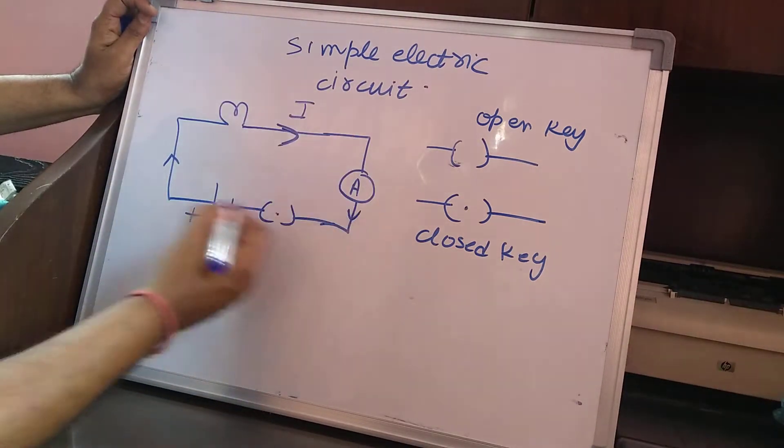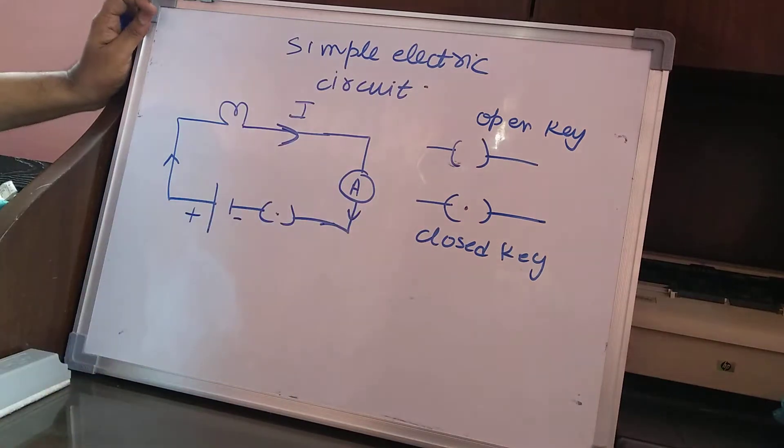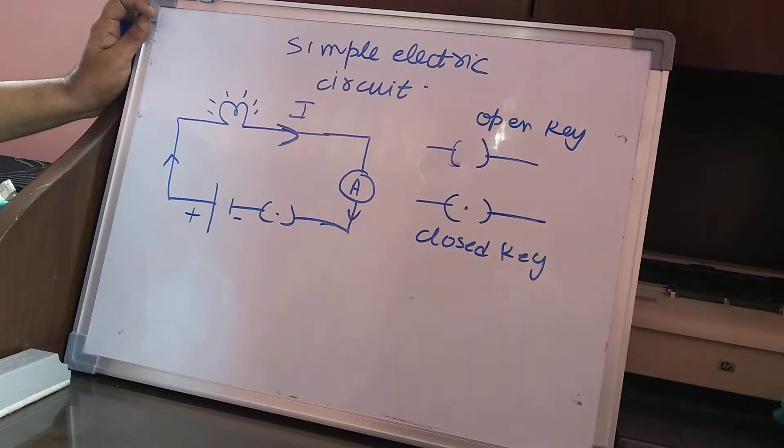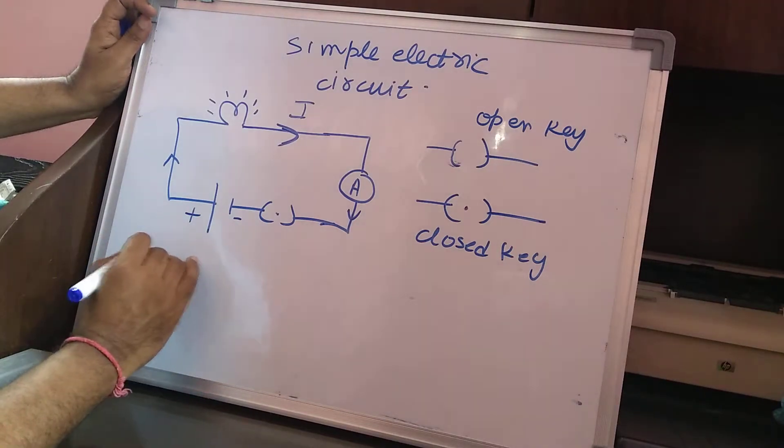When the key is switched on, the current starts flowing. This current can be measured with the help of an ammeter. As soon as the current is switched on, the lamp will start glowing. Now here we can define an electric circuit.